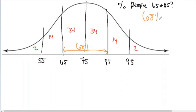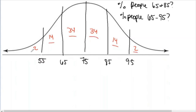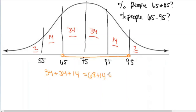Now a slightly harder question: how many people travel between 65 and 95 miles per hour? We fill in 34-14-2 across the distribution. The area between 65 (which is -1 SD) and 95 (which is +2 SD) covers: 34 + 34 + 14 = 82%.